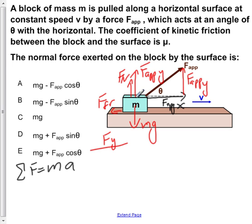If we now take all the ones in the y direction, we would see that we have fn plus f applied y minus mg is equal to ma. But the acceleration in the y direction is going to be zero because we're not leaving the surface, so that's zero.